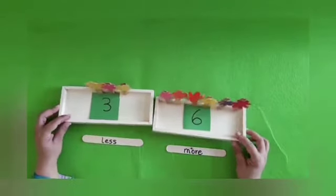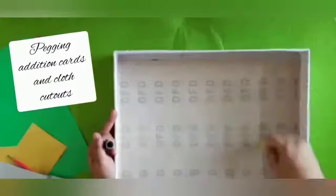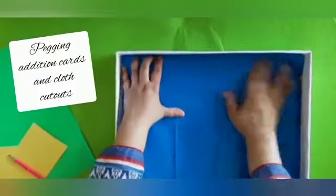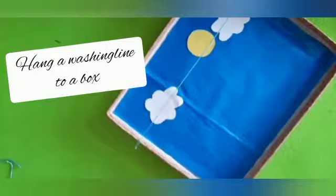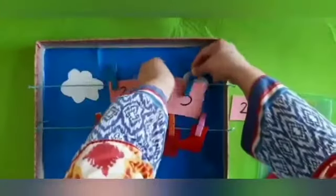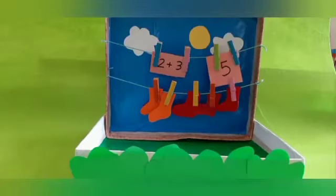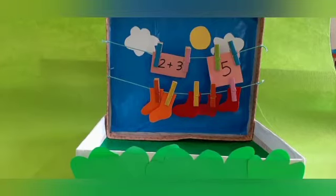A fun math game is to solve an addition sum by hanging clothes or their cutouts on a washing line. This helps children understand the concept quickly as they're representing the fact using material. This also improves eye-hand coordination as children hold the clothes and hang them with the pegs at the same time.